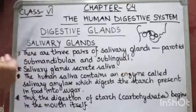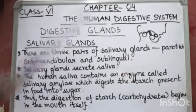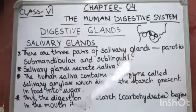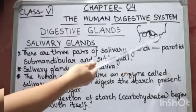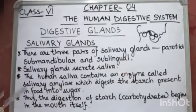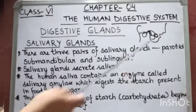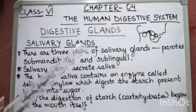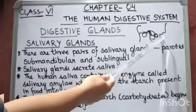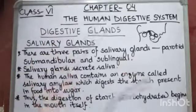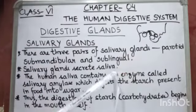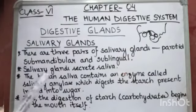Now you're going to learn about the digestive glands, which help in digestion. The first gland is the salivary gland. There are mainly three pairs of salivary glands: the parotid, the submandibular, and the sublingual. The parotid gland is found beneath each ear, the submandibular is present at the floor of the mouth, and the sublingual lies under the tongue.